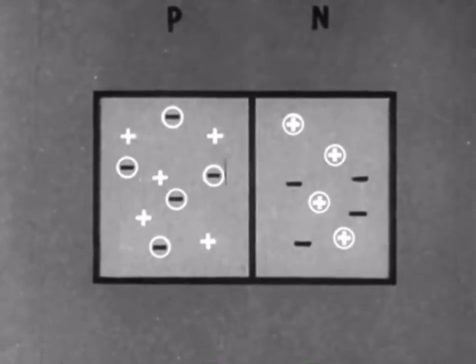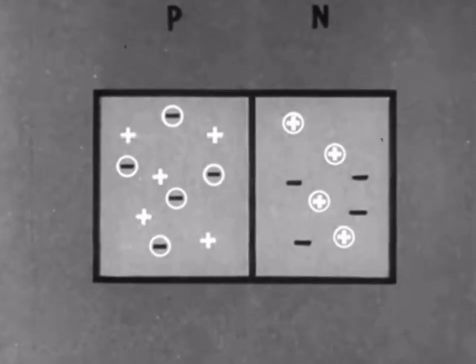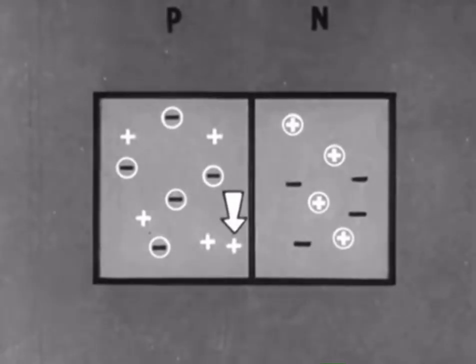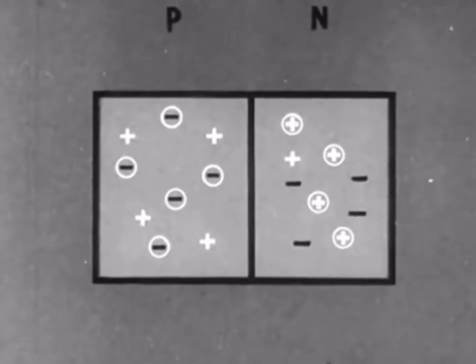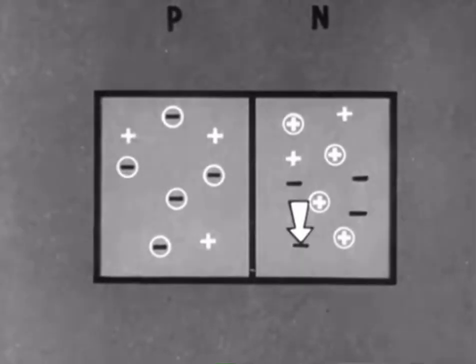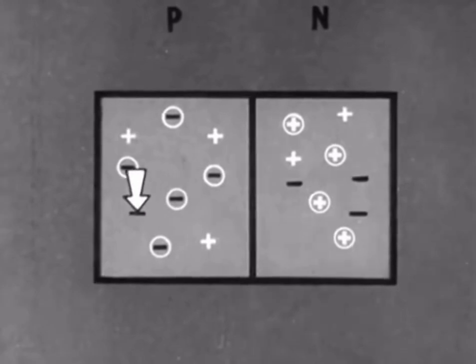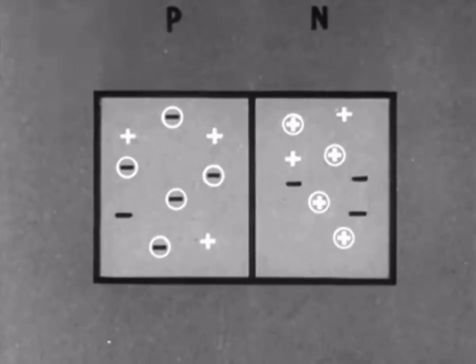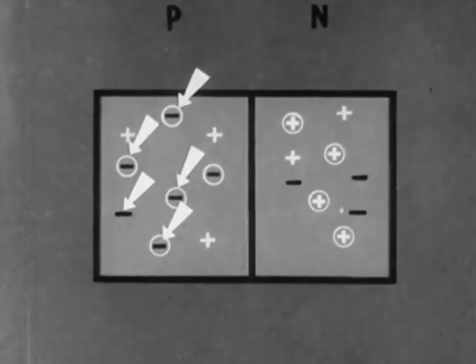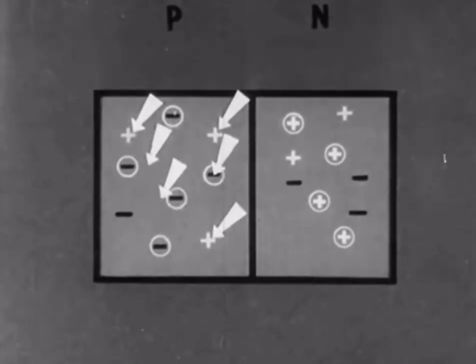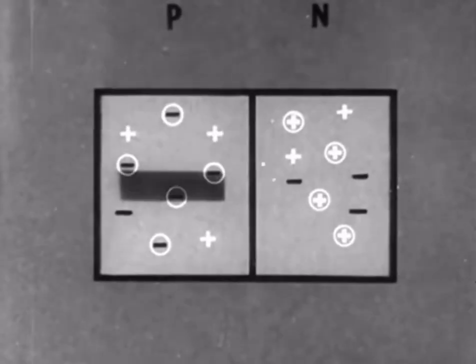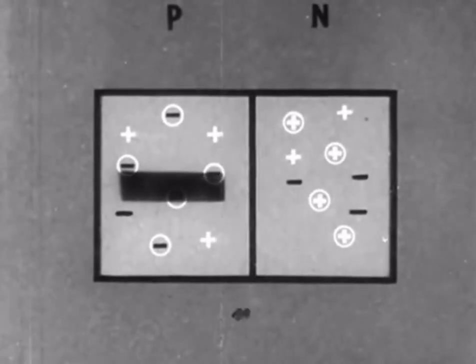Now let us consider what happens when we join the two pieces together. Some of the positive carriers will drift into the N-type germanium. Similarly, some of the negative carriers will drift into the P-type. If we now count up the positive and negative charges, we see that in the P-type, there are more negative charges than there are positive charges, so the material has become negatively charged. In the same way, the N-type material has become positively charged.